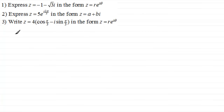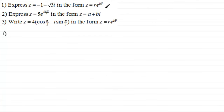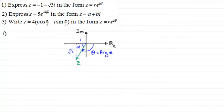Welcome back. If you had a go, well let's have a look at number one first of all. Express z equals minus one minus root three i in the form z equals re^(iθ) — what we call the exponential form of a complex number. To do this, I would encourage you to think about what z would look like on an Argand diagram.